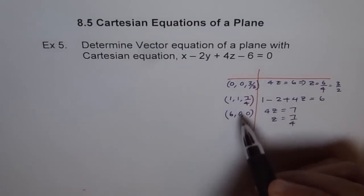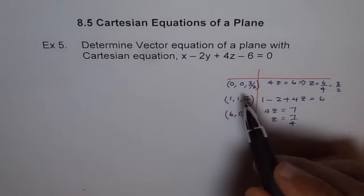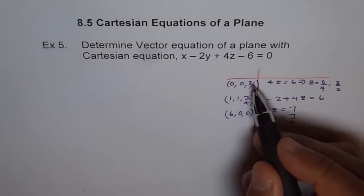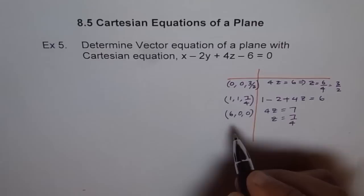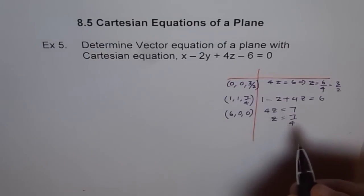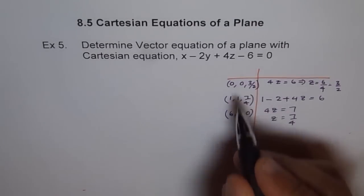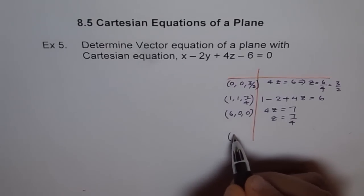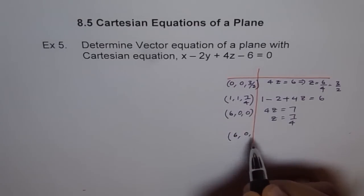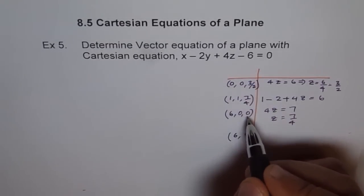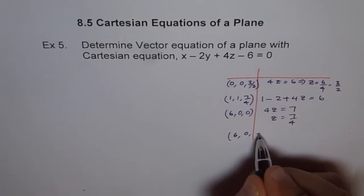Now, using these points, we can have two different direction vectors. One could be between this and this and the other one could be between this and this. So, we have direction 1 will be 6 minus this. That gives us 6, 0 and 0 minus 3. We get minus 3 over 2. That is one direction vector.